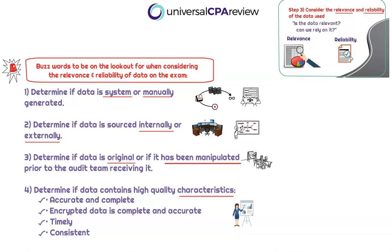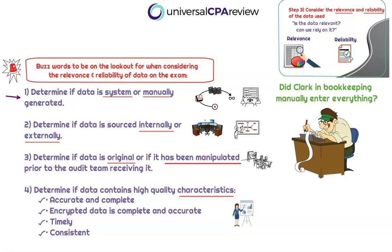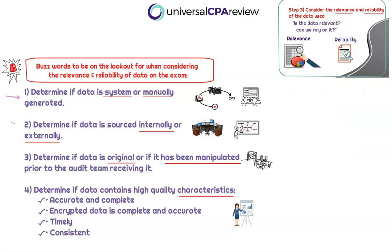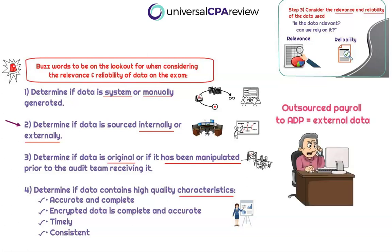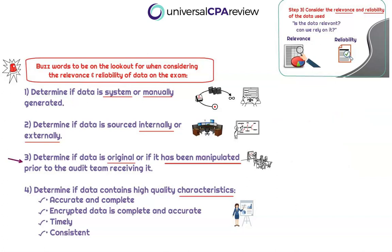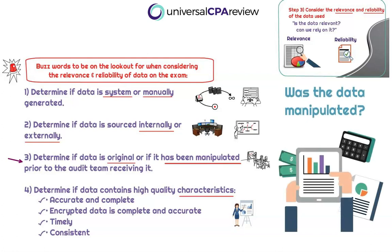Starting with understanding where the data came from — was the data auto-generated from a system or was it manually entered? Did Clark in the bookkeeping department type all this stuff out into Excel? If he did, does that increase the risk that the data is less reliable — maybe he entered a six instead of a three. We also want to determine where the data was sourced from — internally or externally. Did the client create data in-house or did they outsource it from ADP to create payroll records? We want to determine if the data is original or has it been manipulated prior to the audit team receiving it.